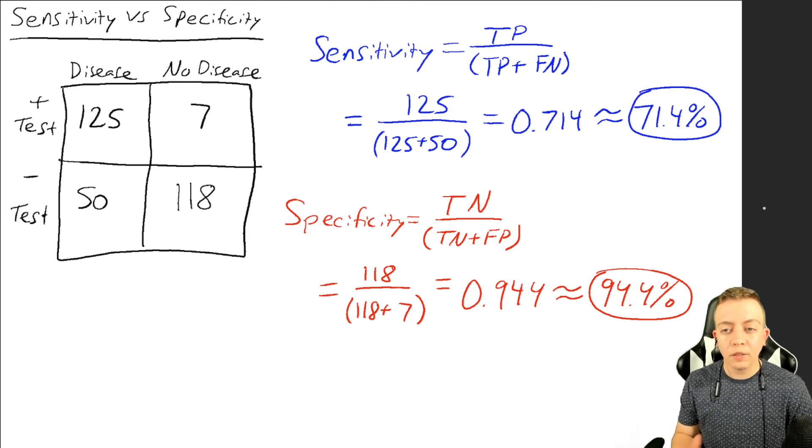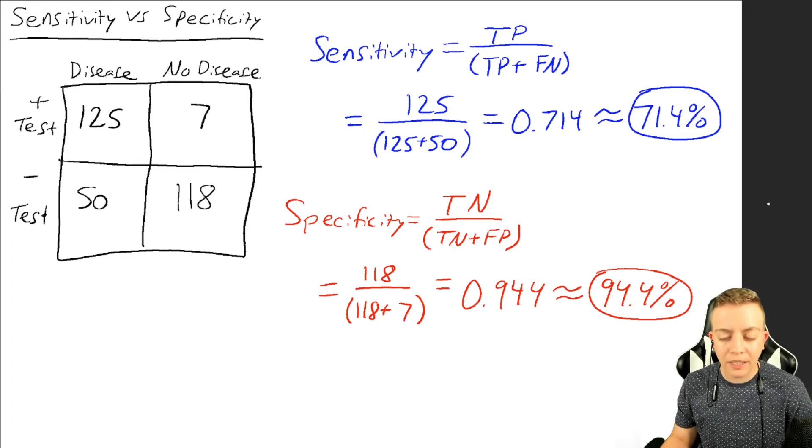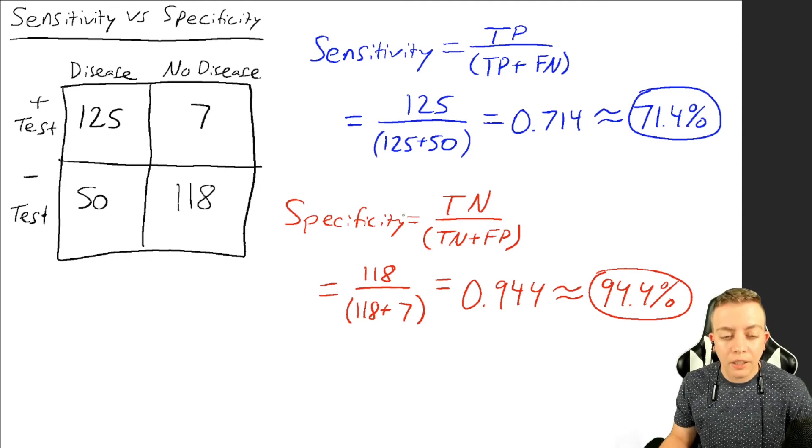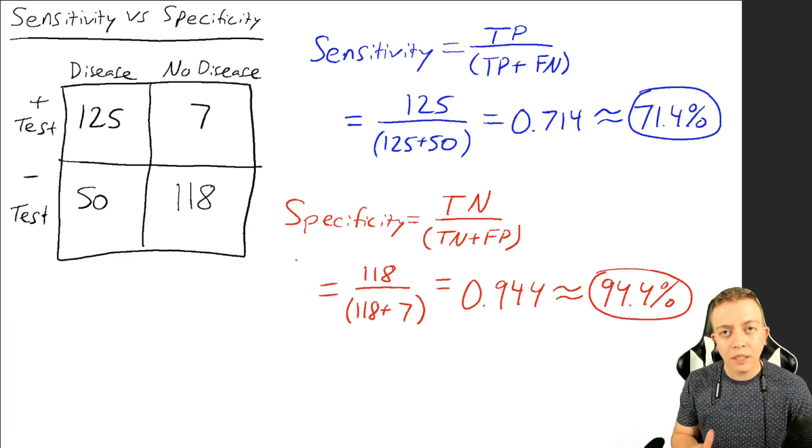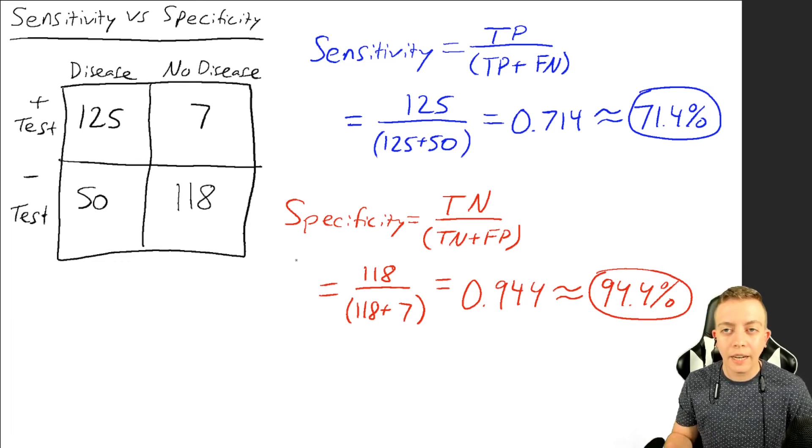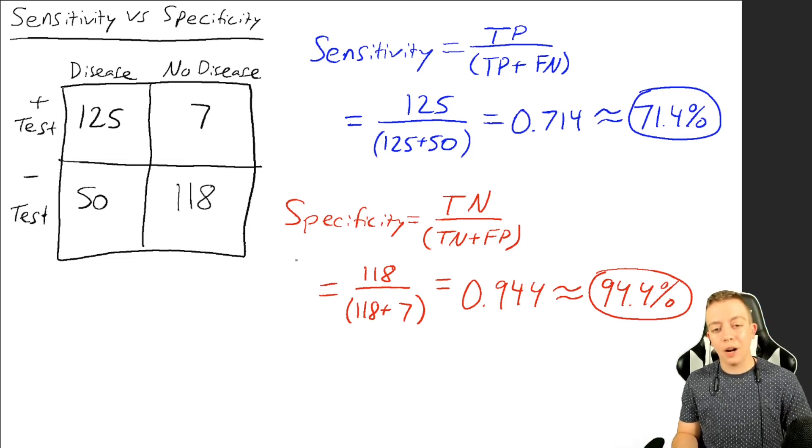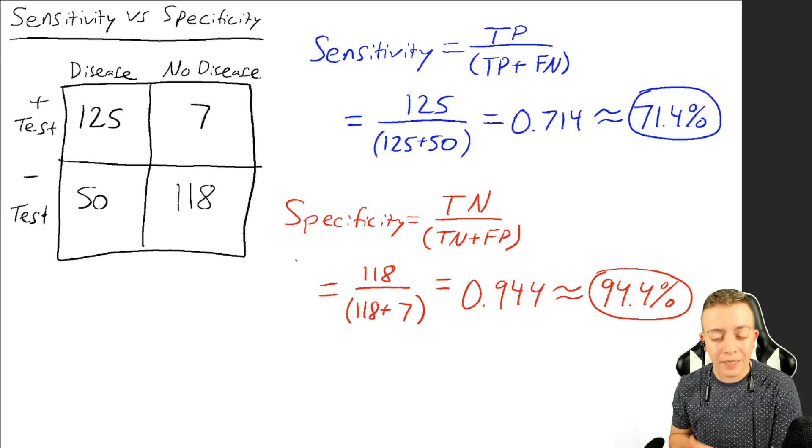What we're learning from both of these numbers, if we take both of these into account, we know that this test is more specific than it is sensitive. It's better at telling us that someone without the disease is more likely to get a negative test, which is great. We're good at ruling out people who do not have the disease.